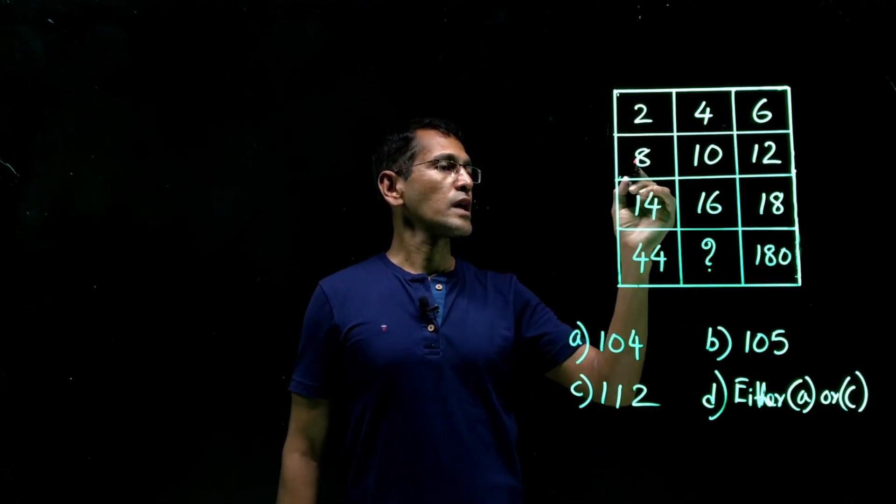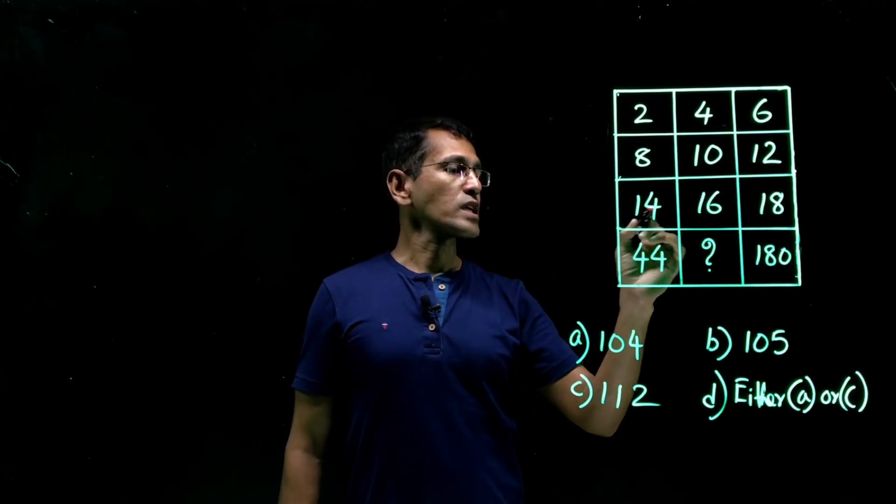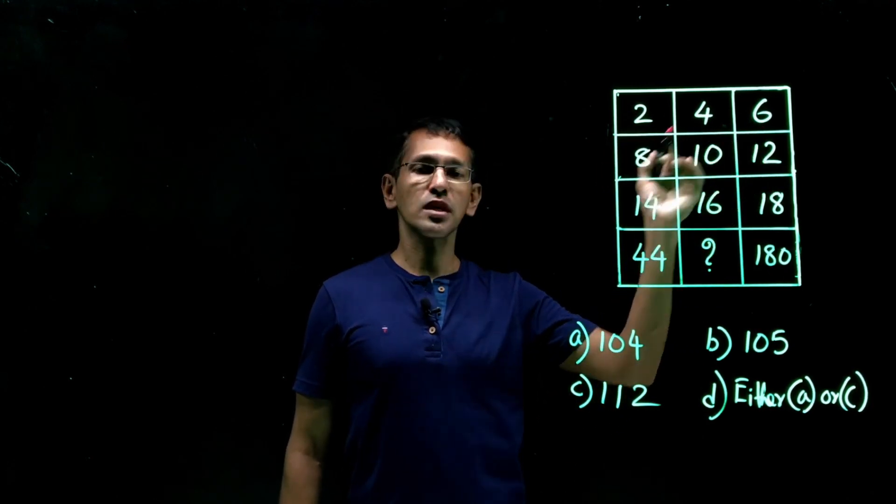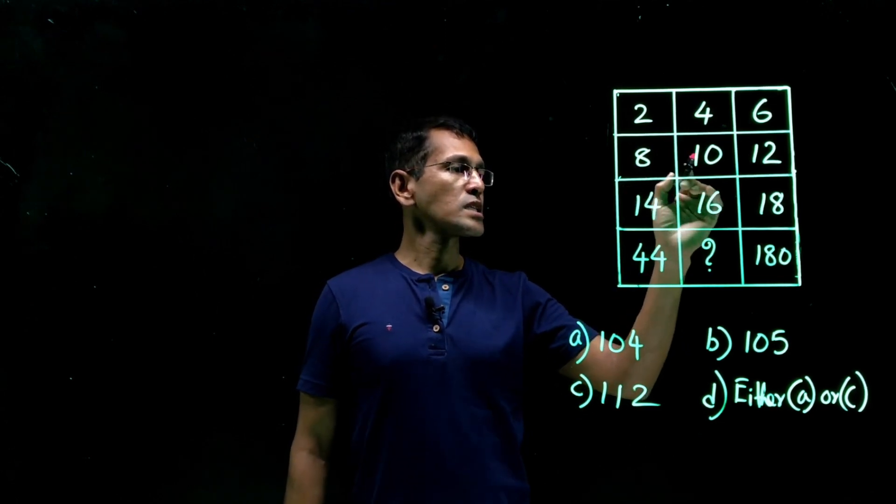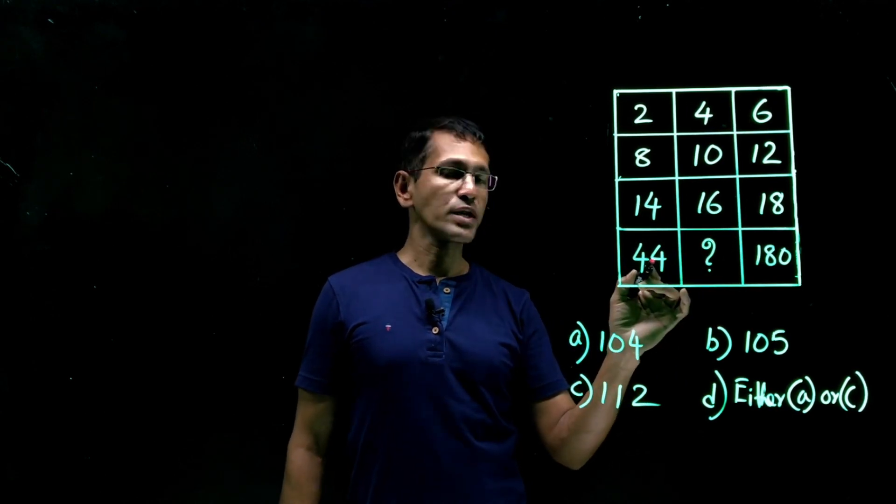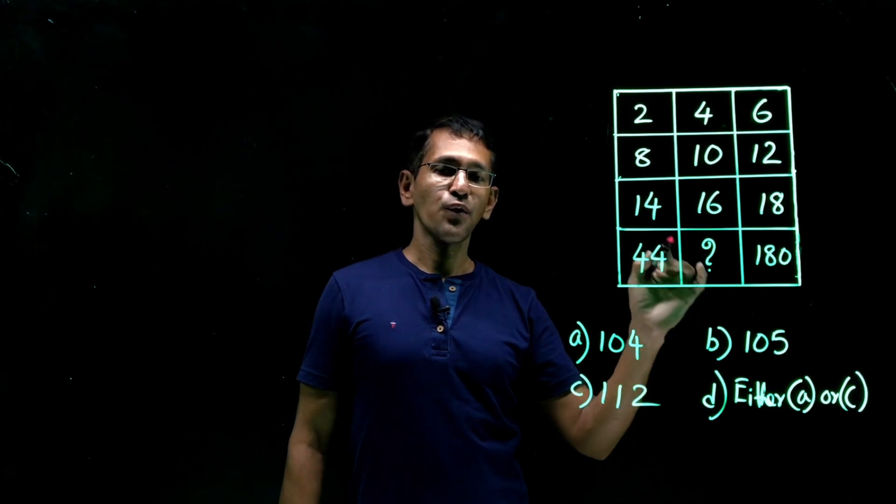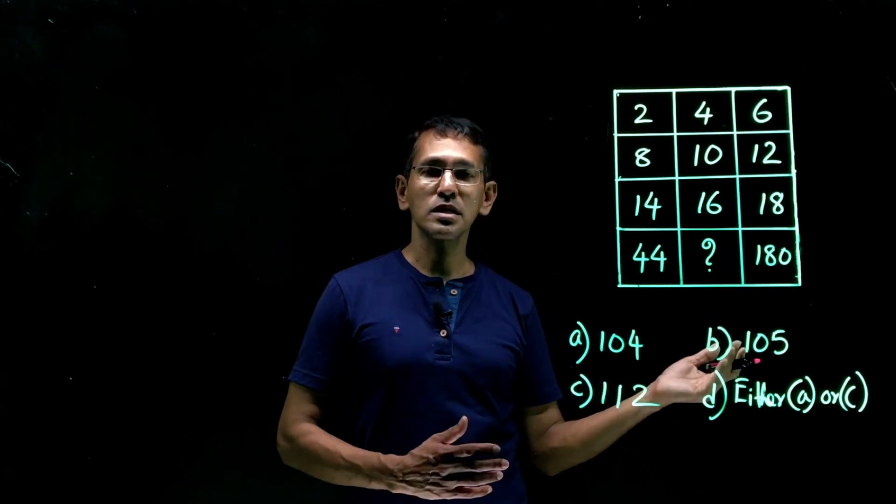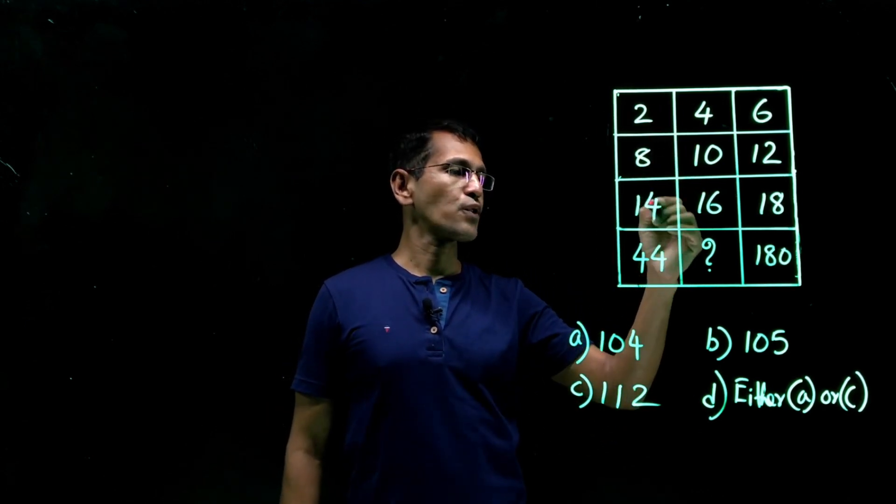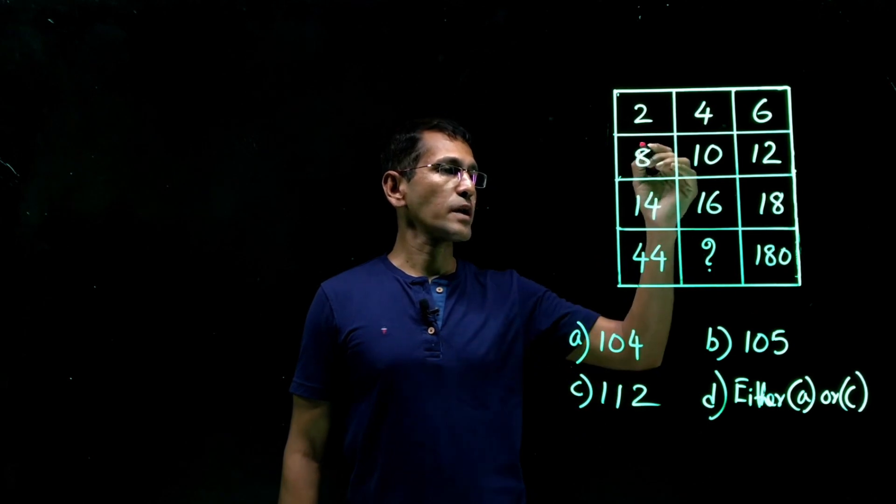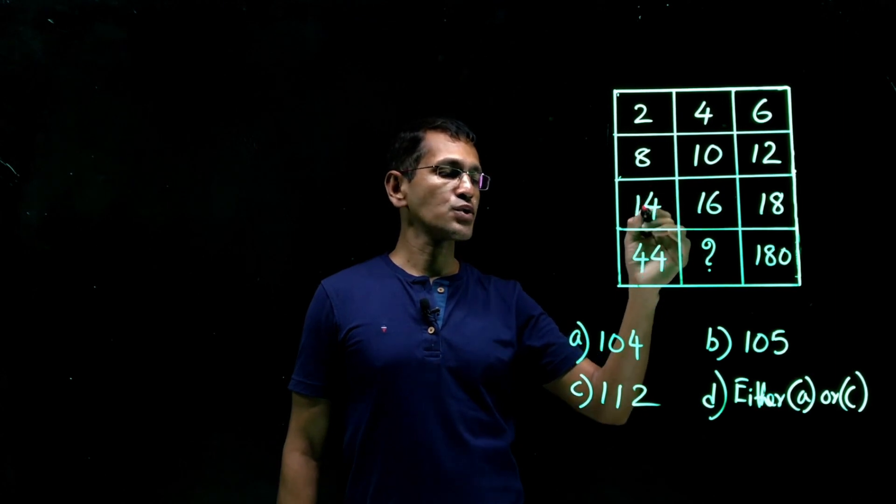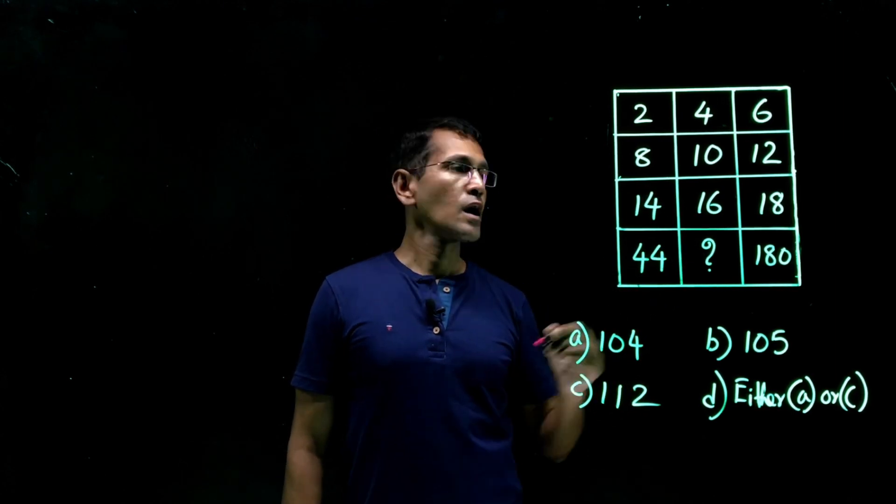Well, we have 2, 4, 6, 8, 10, 12, 14, 16, 18. The pattern what we see is 2 plus 2 is 4. 4 plus 2 is 6. In this case it's same thing. 8 plus 2 is 10. 10 plus 2 is 12. 14 plus 2 is 16. 16 plus 2 is 18. And 44 plus 2 must be 46. 46 plus 2 must be 48. But that is not the case.